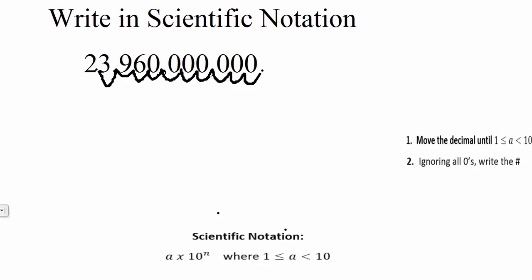Step two, ignoring all zeros, write the number. So ignoring all these zeros here, we would now have 2.396. And this would represent your a.